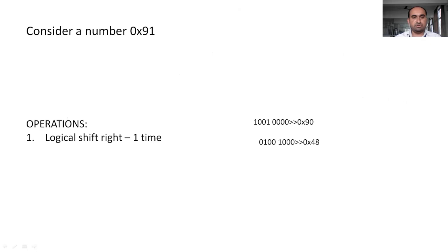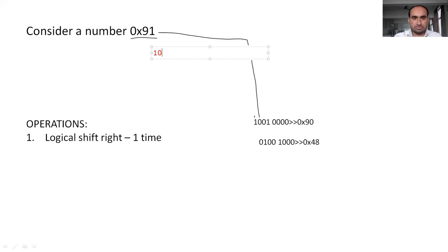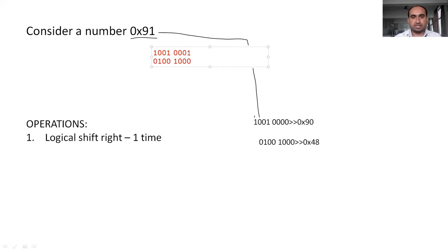Consider the number 0x91. Its equivalent binary number is 1 0 0 1 0 0 0 1. We perform one-time right shift operation. After the shift, the result is 0 1 0 0 1 0 0 0. The LSB bit, which is 1, has now moved to the carry flag register C. The carry flag register is updated with logic 1.